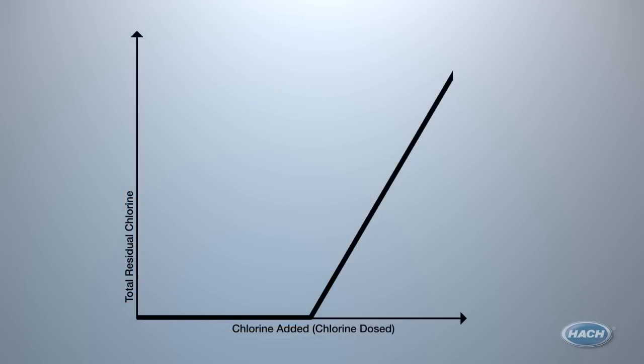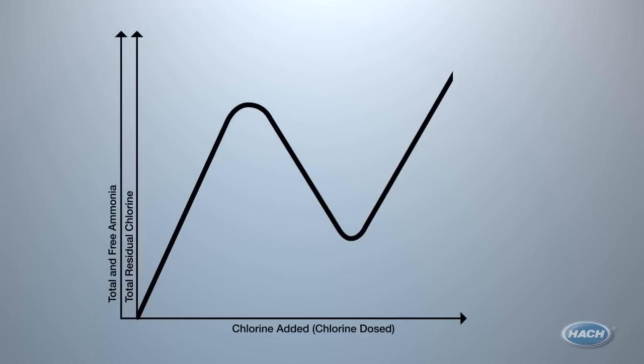When ammonia is added to chloraminating systems or is present in the system, our graph changes, pushing up the amount of matter the chlorine has to bond with initially. This creates what is known as the chloramination curve.